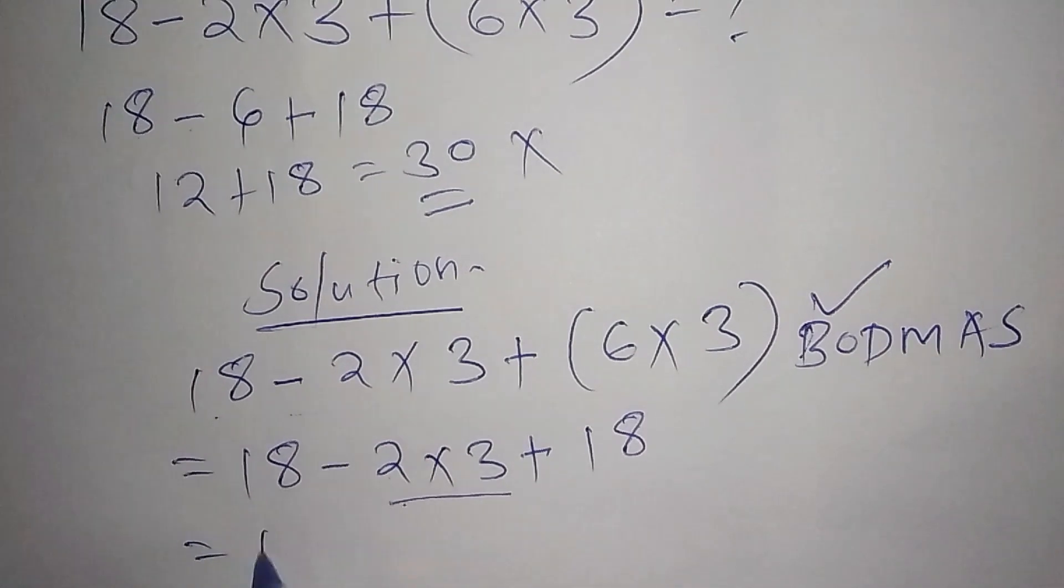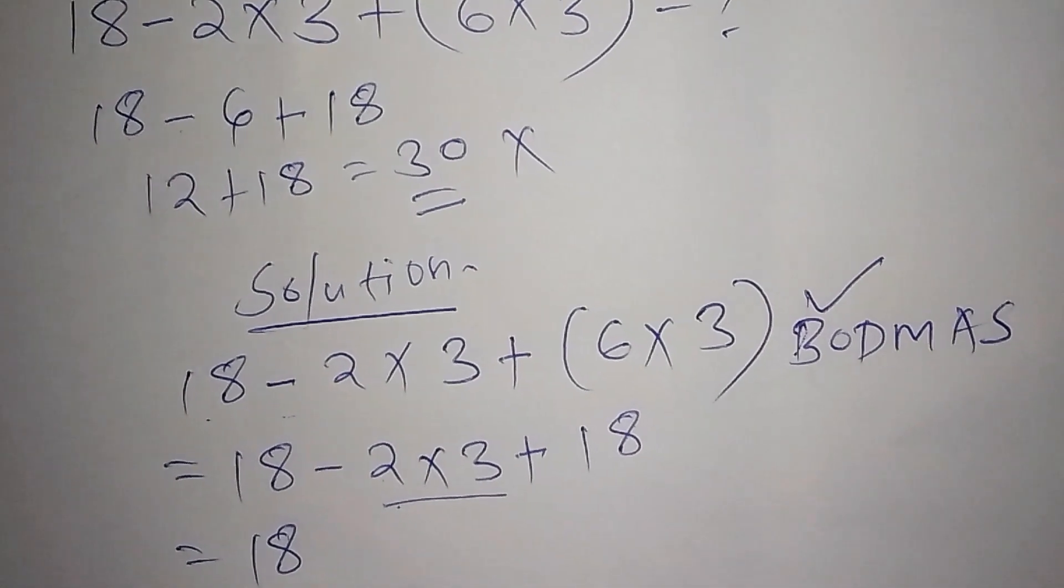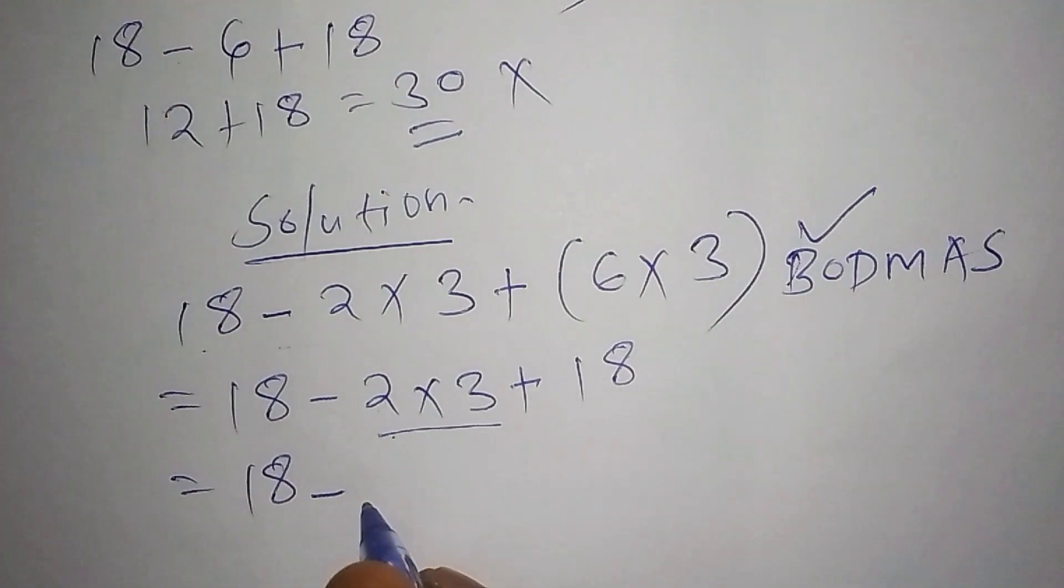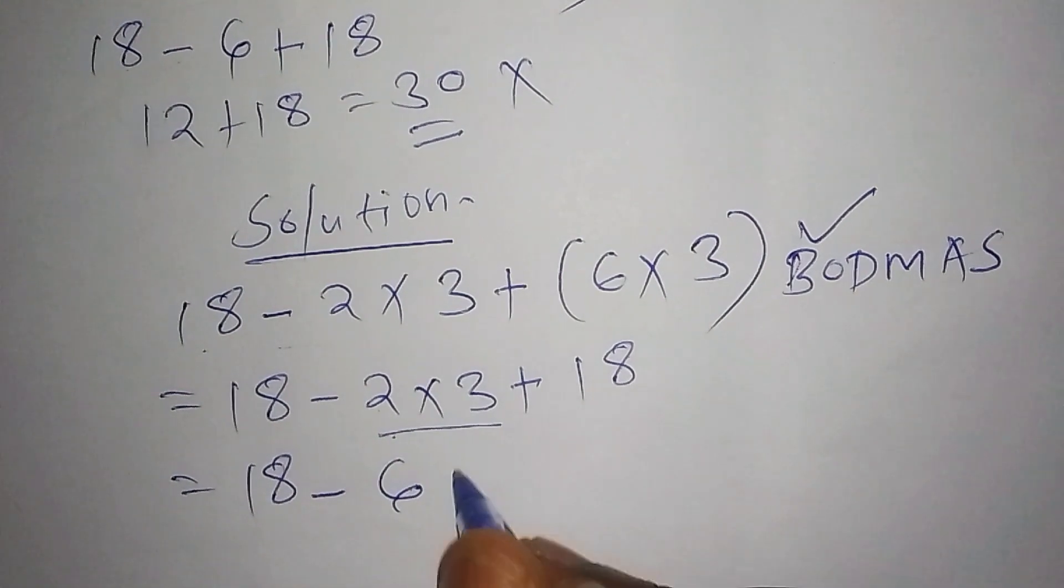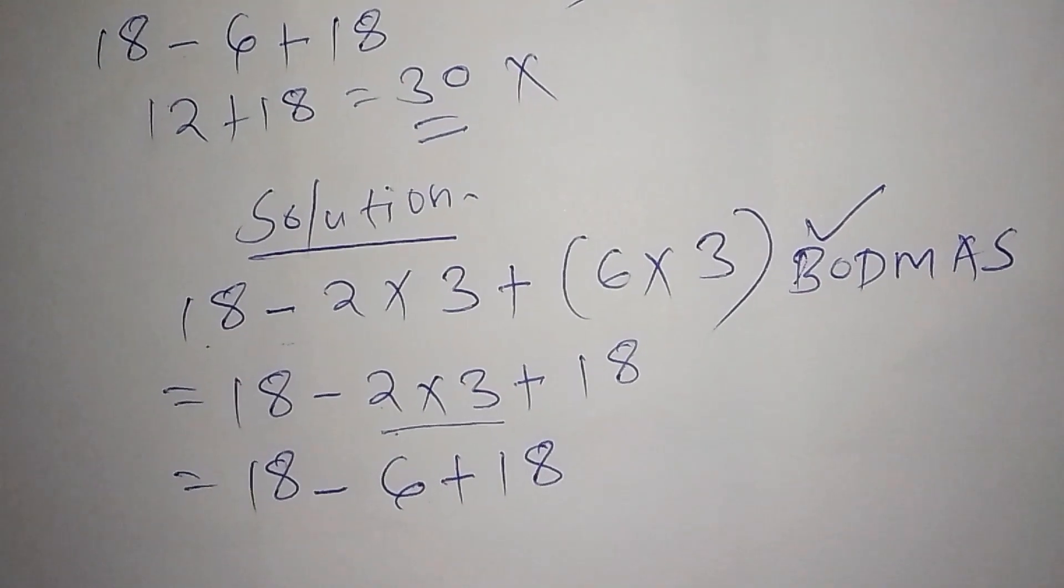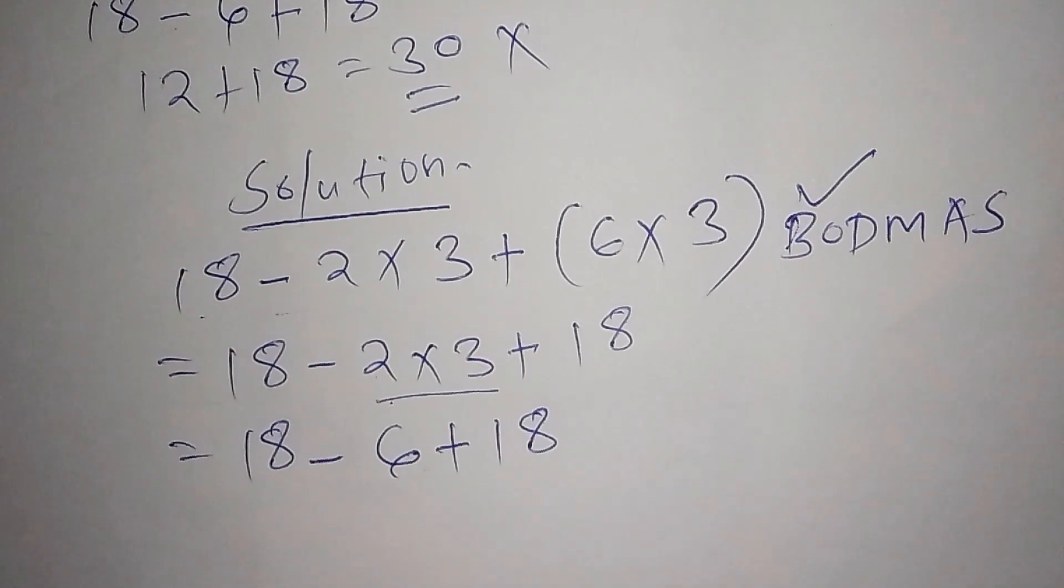The 18 that you're having, we shall say minus 2 multiply by 3 is 6, then 6 plus 18. Once you have reached that particular level, we shall now rearrange it.